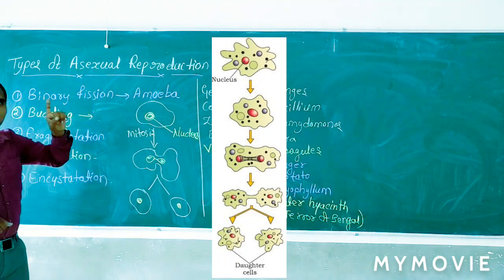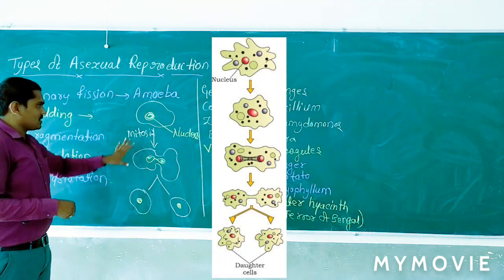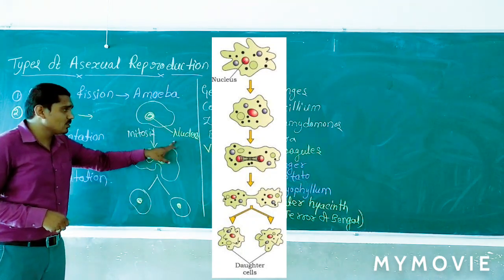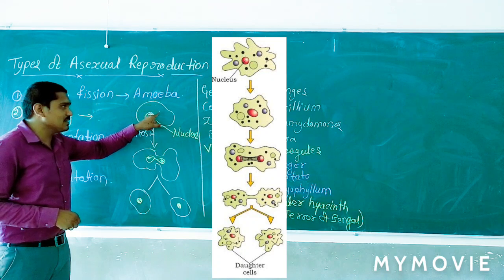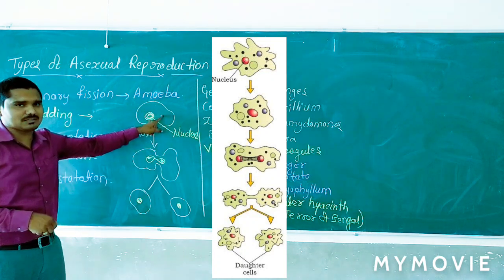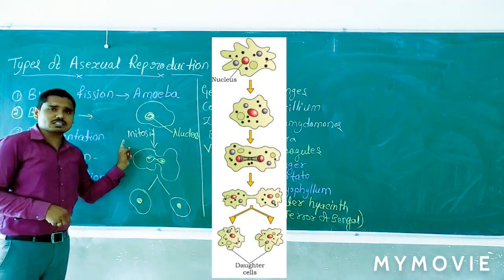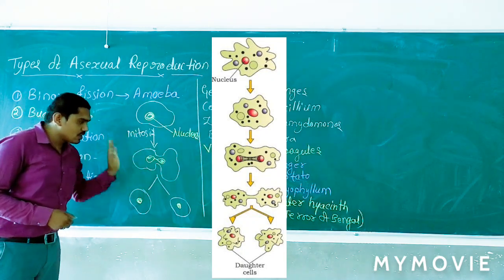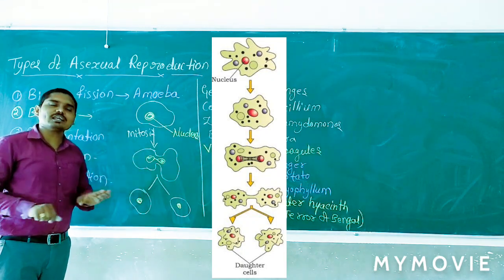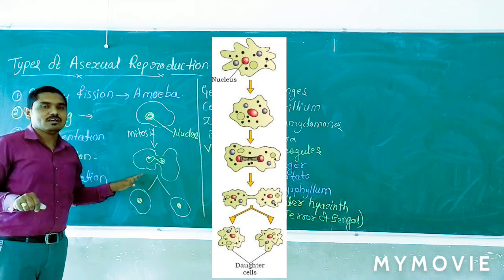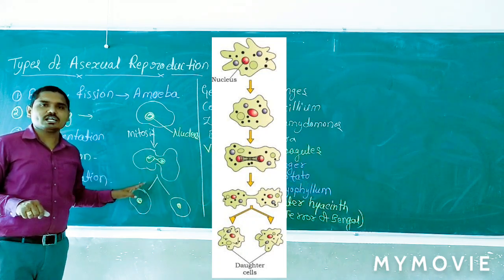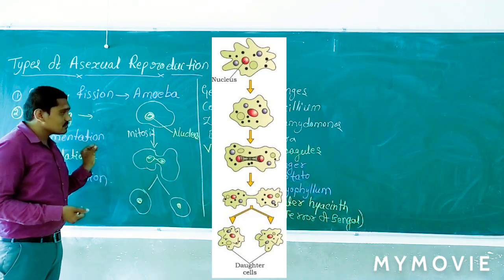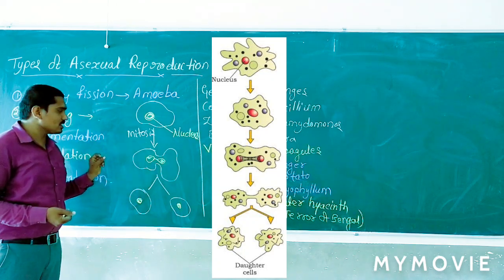In binary fission, the main thing to remember is that the cell like amoeba has a nucleus, and inside the cell there is also cytoplasm. At the time of the mitosis process, both the distribution of cytoplasm and the distribution of nucleus occur. If the cytoplasm is equally distributed, that process is called cytokinesis.